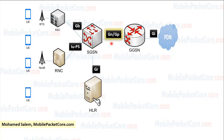GNGP is the interface between the SGSN and the GGSN. GR is the interface between the SGSN and the HLR. GI is the interface between the GGSN and the PDN. We will go deeper into network interfaces in the following lessons.